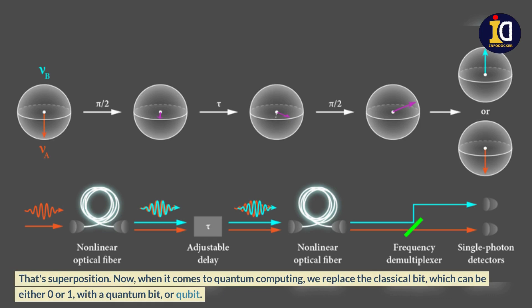Now, when it comes to quantum computing, we replace the classical bit, which can be either 0 or 1, with a quantum bit, or qubit.